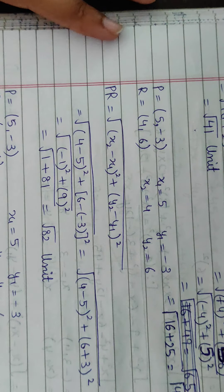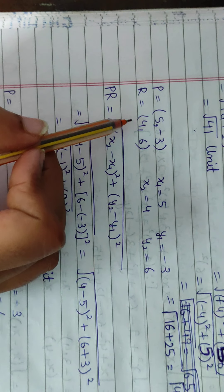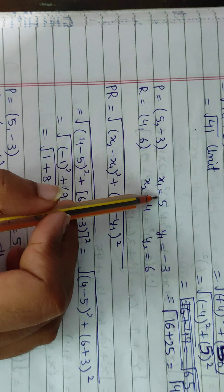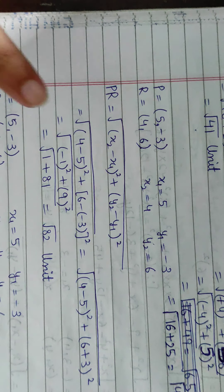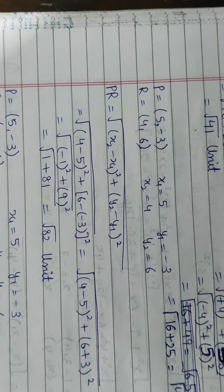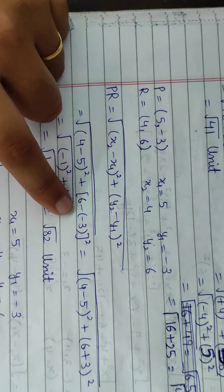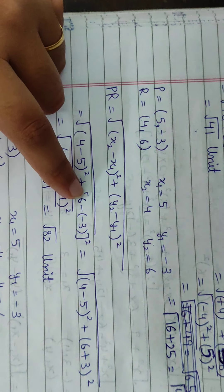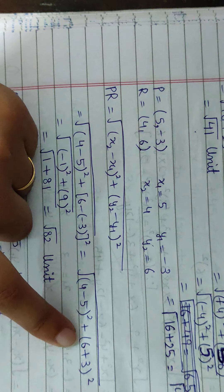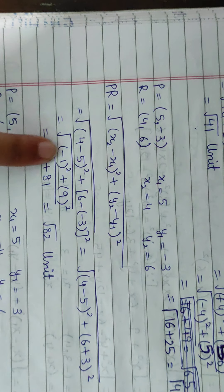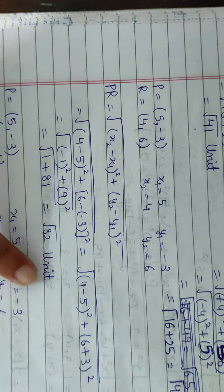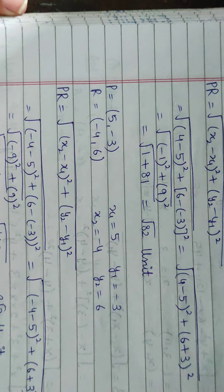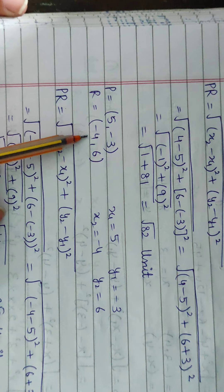For PR when x = 4: P is (5, -3) and R is (4, 6). So x1 = 5, y1 = -3, x2 = 4, y2 = 6. PR = root of (x2 - x1)² + (y2 - y1)² = (4 - 5)² + (6 - (-3))². That gives (-1)² + (9)² = 1 + 81 = 82. So PR = √82. Wait — recalculating: 4² + 5² = 16 + 25 = 41, then with 9²: 1 + 81, solving gives root 88 units.